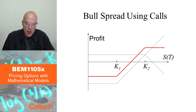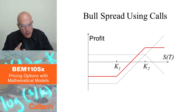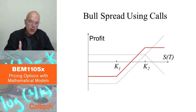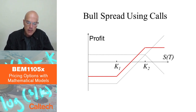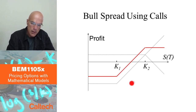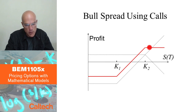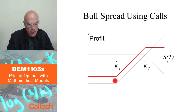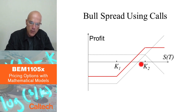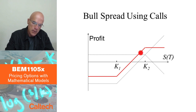The payoff we would like to create — and the cost of options is included here — is this red graph: a negative constant below K1, a positive constant above K2, and a 45-degree line in between K1 and K2.